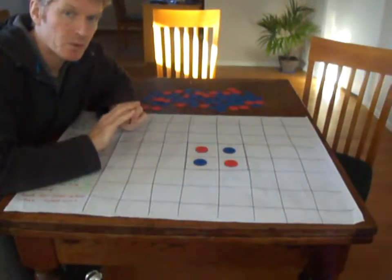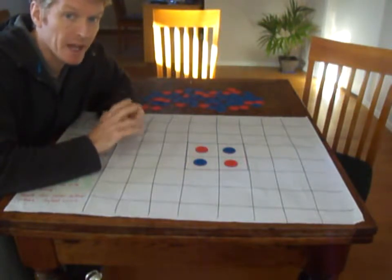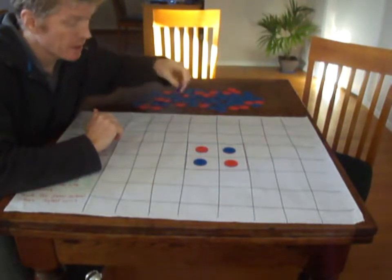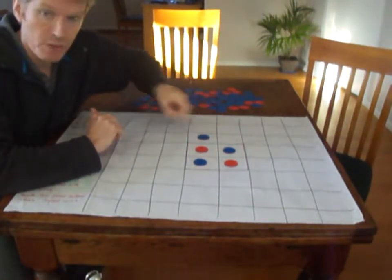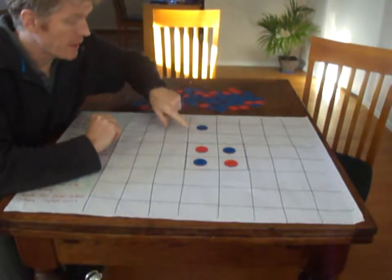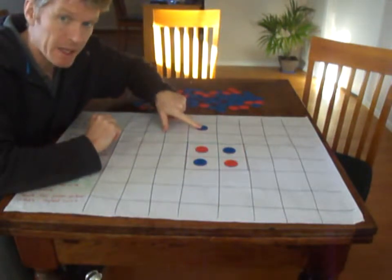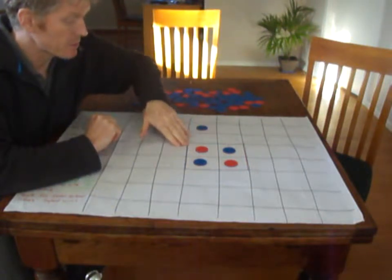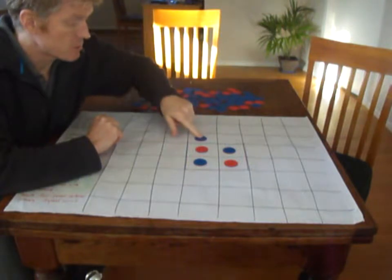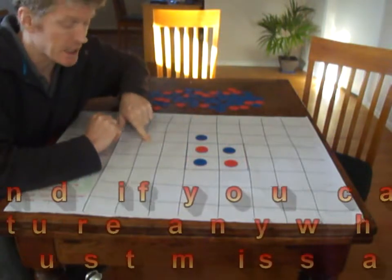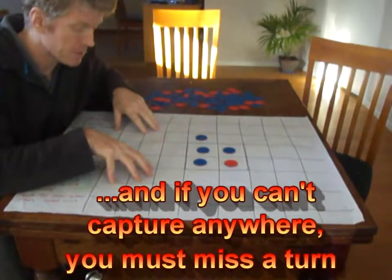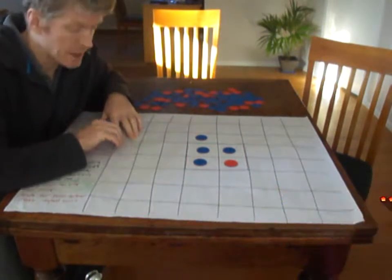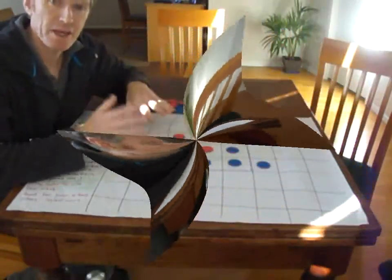Just want to clarify quickly one other rule about the capturing of pieces. If blue is going to play and wants to capture the red piece here, they cannot play here and make a capture. There can't be a gap. Any time there's a gap, that's not going to be a legal capture. It needs to be directly adjacent. Sometimes there will be gaps in the board and those gaps don't count in the row that's being captured.